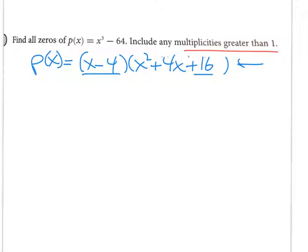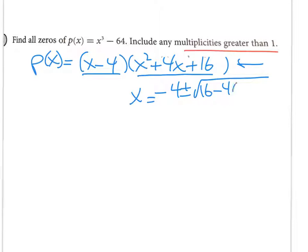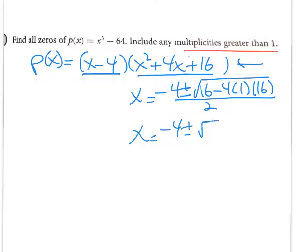That other big quadratic factor won't factor anymore, so I'm going to solve it using the quadratic formula: x = (−b ± √(b² − 4ac)) / 2a, where 2a is just 2. Working out the discriminant, we get negative 48 all over 2.